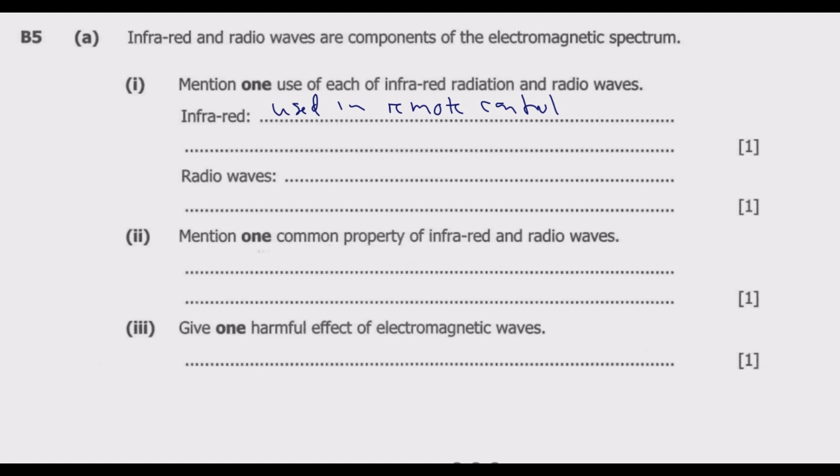The other use is in security systems that detect movements, such as car alarm systems. Then also used in thermal imaging. These are cameras that normally detect people in the dark. When it's very dark, these cameras are able to detect the image, whether of a person or animals. These are the applications of infrared.